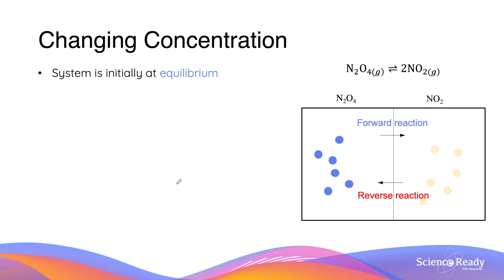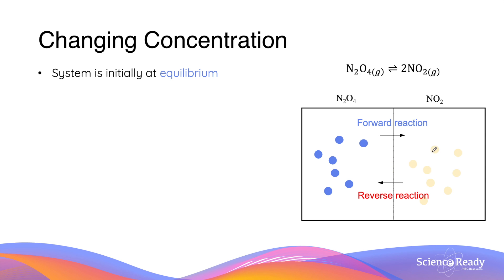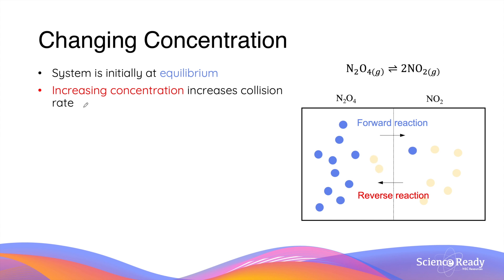Let's look at concentration first. Using the same reaction — the reversible equilibrium between N2O4 and NO2 — initially the system is at equilibrium, meaning the rate of the forward reaction equals the rate of the reverse reaction. One molecule of N2O4 breaks down to form two molecules of NO2, and those two NO2 molecules can undergo the reverse reaction to reproduce one molecule of N2O4. What happens if we increase the concentration of N2O4?